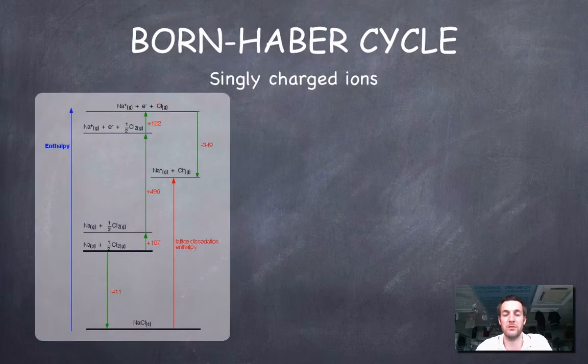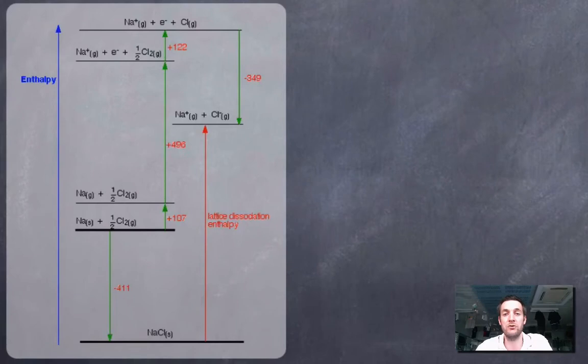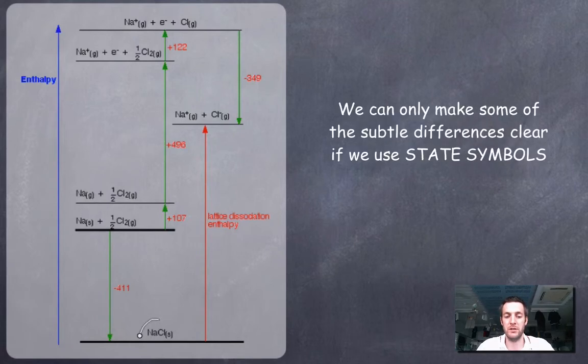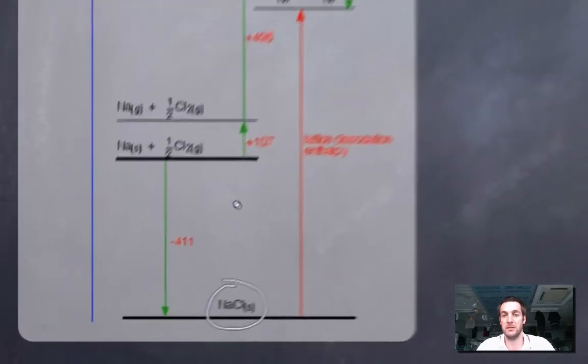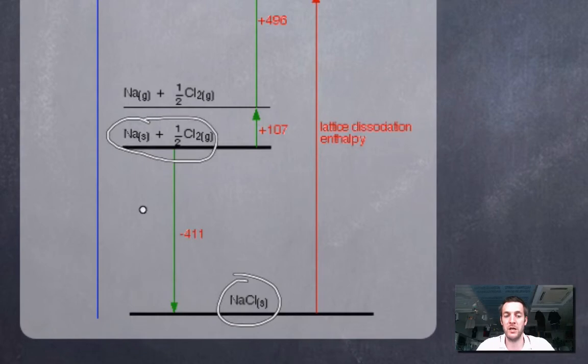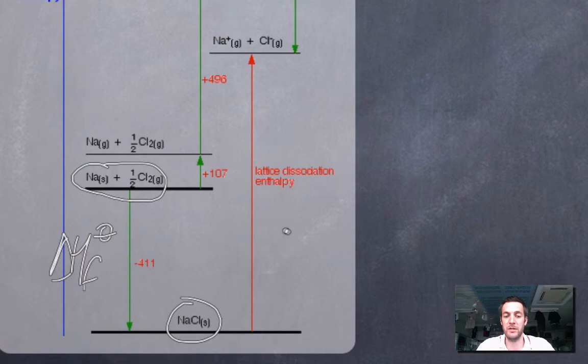Anyway coming back to our Born-Haber cycle now and seeing where these things fit in because it's crucial that we are able to label one of these cycles that we can construct one and that we can see where all these enthalpies that we've talked about fit in. So once again we've got and paying very careful attention here to what's different between these levels and the states that things are in. Here we've got one mole of an ionic substance, it's being formed from its elements so if one mole of a substance is forming from its elements this must be the standard enthalpy of formation. Here is a lattice dissociation enthalpy so this is the lattice enthalpy we talked about earlier we've got one mole of an ionic lattice forming gaseous ions.